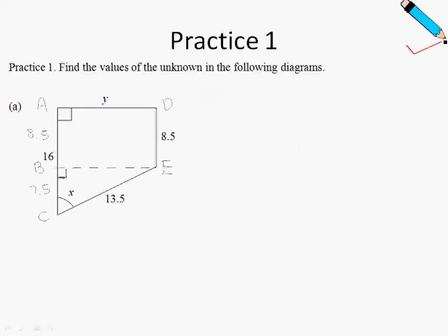Welcome to practice 1 of TRIGGLE. So over here we have a diagram, and you'll notice that I've labeled a dotted line over here. This is to help us solve in an easier way. Also notice that I've labeled the diagram A, B, C, D, and E.